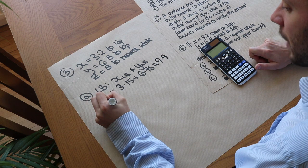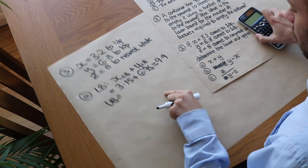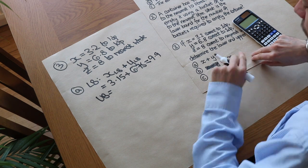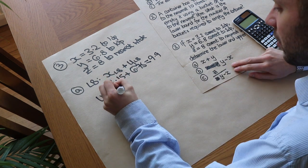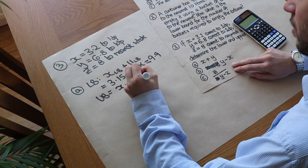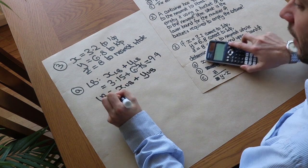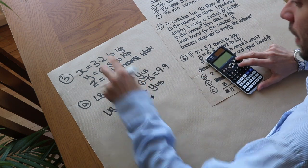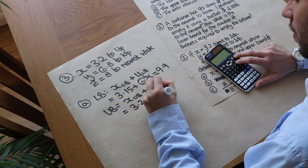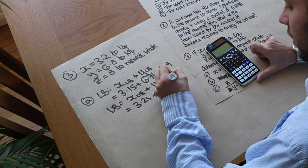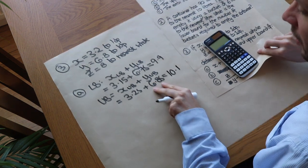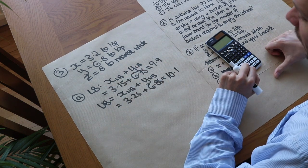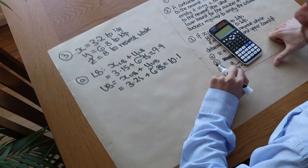For the upper bound of x plus y, we add the greatest two possible values: the upper bound of x plus the upper bound of y, which is 3.25 plus 6.85, giving 10.1. So the sum of these two numbers could be any value between 9.9 and 10.1, excluding 10.1 itself.